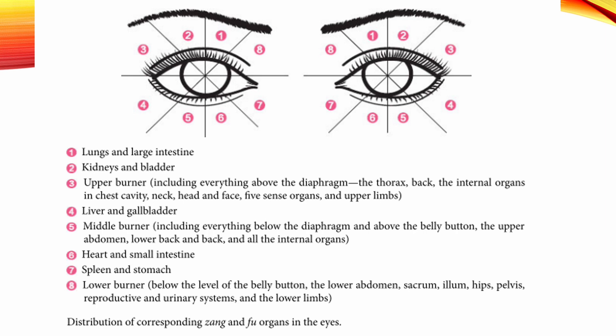Looking straight ahead, draw an imaginary straight line connecting the centers of the pupils and extend it through the medial and lateral canthi. Then draw another straight line vertically through the centers of the pupils and extend it beyond the upper and lower eye sockets. In this way, the eye is divided into four parts. Then divide each part further into two equal zones — that is four quarters and eight identical areas. These eight identical areas are the eight zones, each corresponding to a specific internal organ.